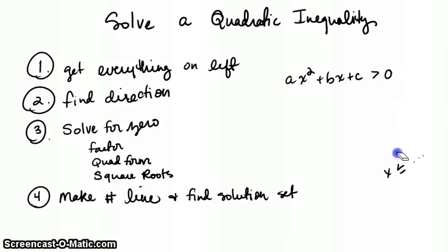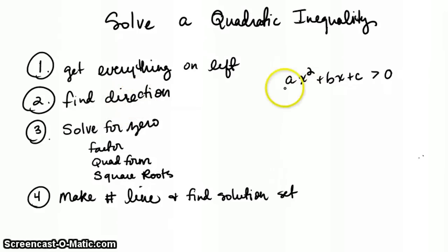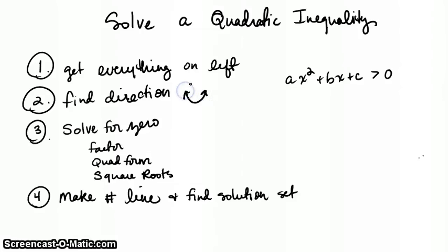Or you might not have any solution at all, but I don't think we'll see that today. So the steps for doing this: first you want to get everything on the left-hand side so it looks like ax squared plus bx plus c compared to zero. Then you want to find your direction — to find the direction of a graph, we use a. It's a smiley face or up if a is positive, or down like a frown if a is negative.